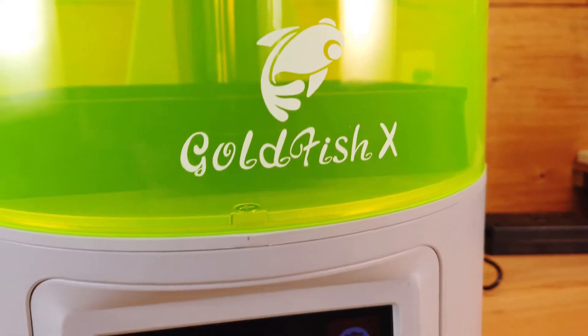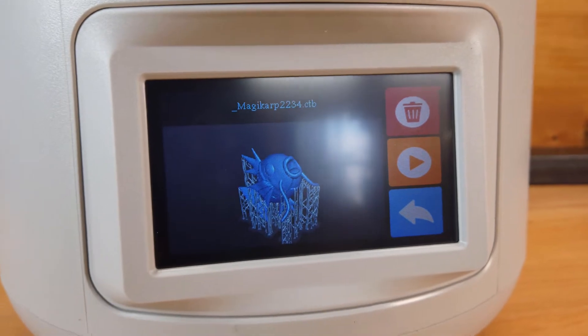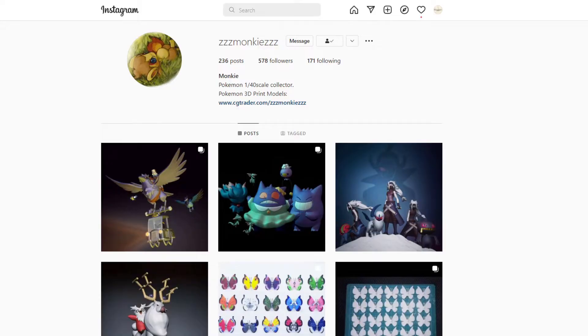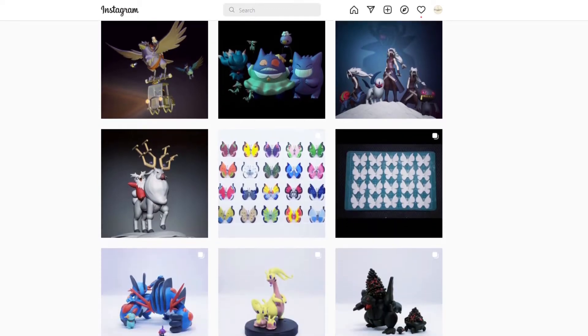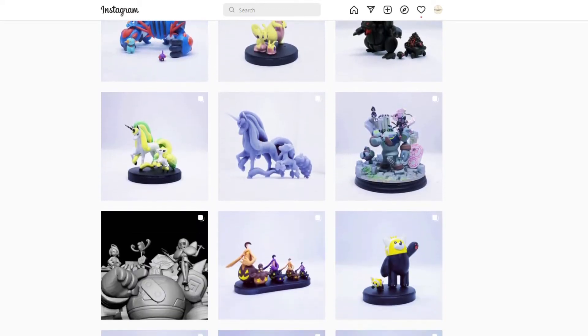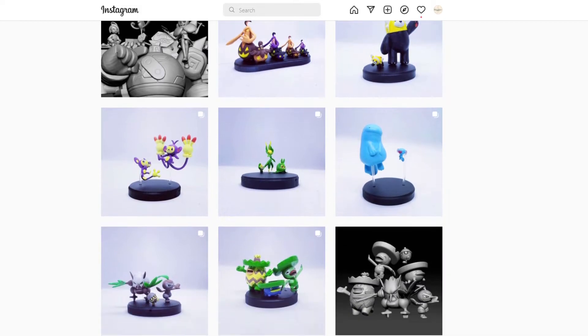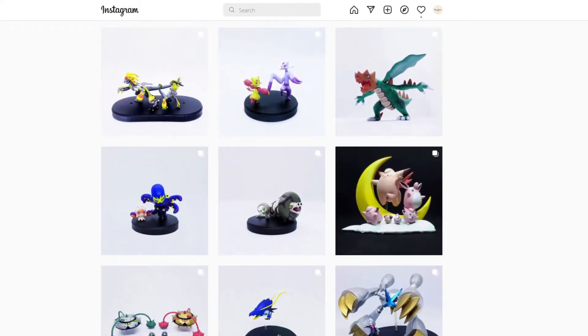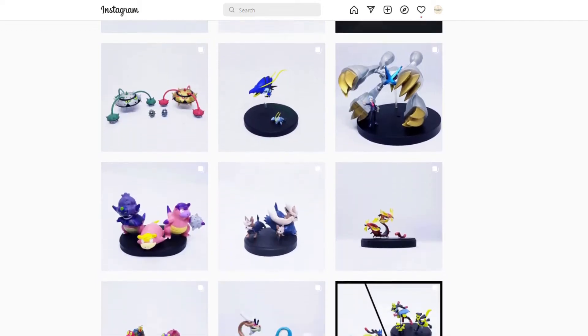Since this is called the Goldfish, I thought it'd be only fitting to print a Magikarp as my first test print. I got this file from someone over on Instagram. They have a ton of different Pokemon related files that you can buy and use however you like. I highly suggest checking them out if you're interested, and I'll have links to that account in the description below.